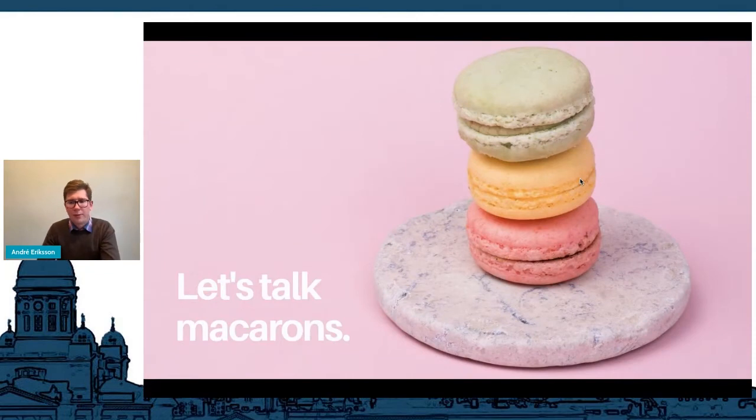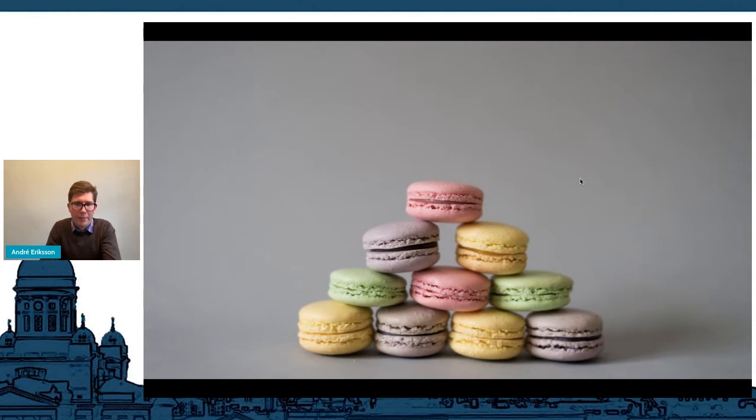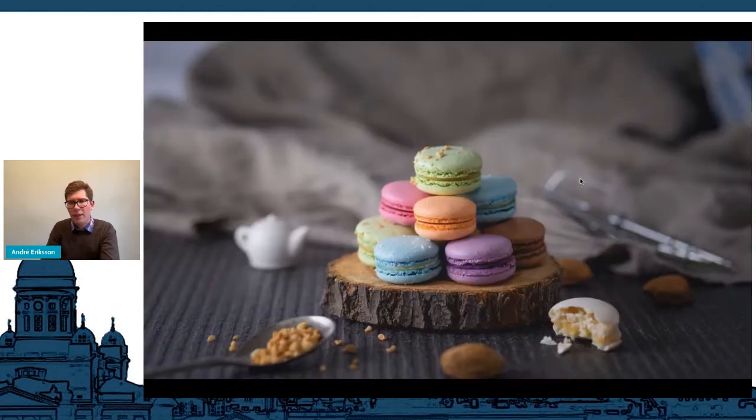Another way that low code is great is it helps you iterate and build on top of what you already have, just like macarons makes it easy to build on top of each other. Another great aspect of low code is when you decide you've been working on something and you need to pivot, you need to do something else, and you need to quickly rearrange your application to work differently. Low code makes it easy, just like macarons are easy to rearrange.